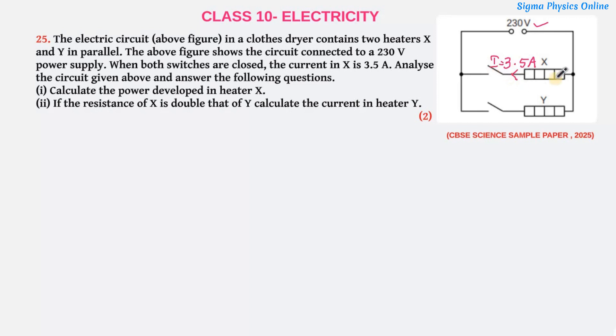Now a current of 3.5A flows through heater X when the circuit is closed. We have to find out the power developed in heater X. Let's write down what data we have.